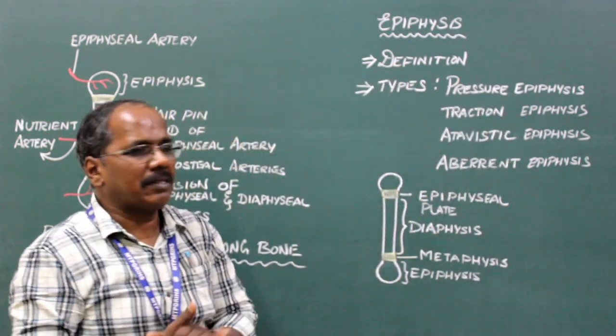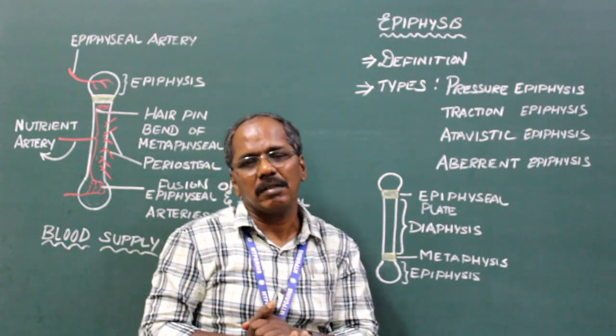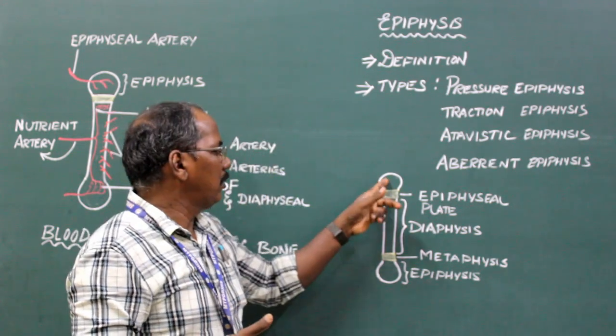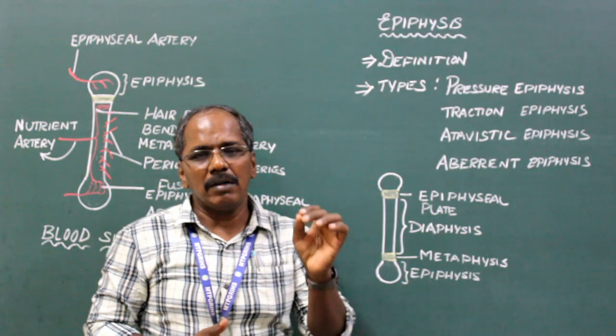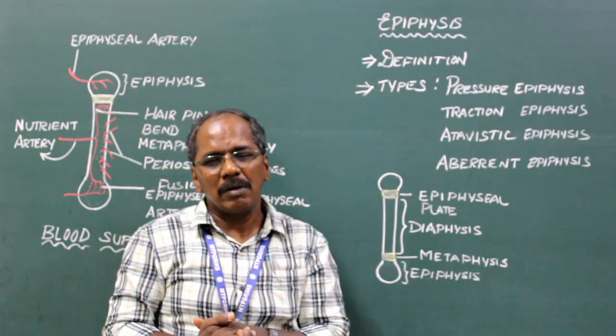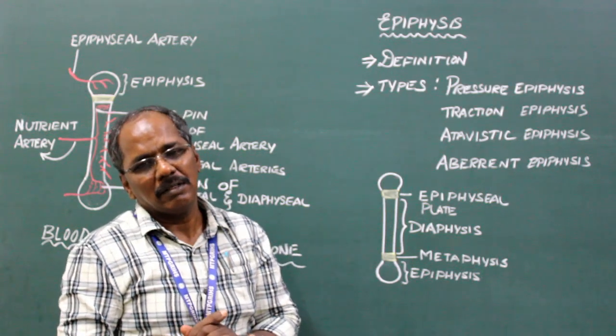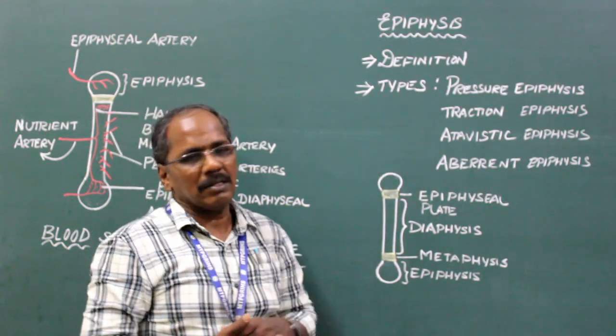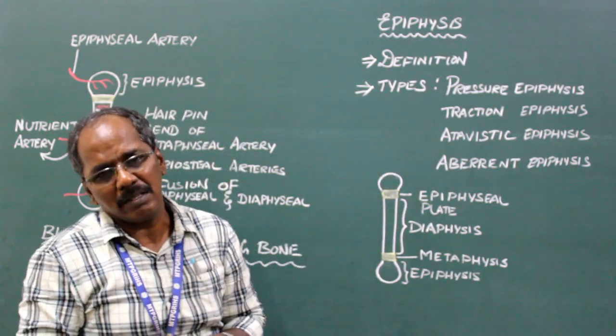Epiphysis, what is epiphysis? The ends of the bone which ossify from the secondary centers are known as epiphysis. There are four types of epiphysis.